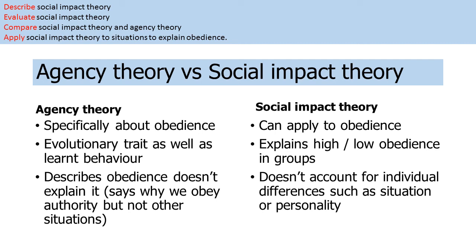Moving on to the comparison between agency theory and social impact theory: agency theory was created by Milgram and suggests we have an evolutionary trait to obey, also socialized from an early age. However, it describes obedience without fully explaining why we obey some authority figures. Social impact theory wasn't designed solely to explain obedience — it also explains conformity and prejudice. It can explain high or low obedience within groups, but doesn't account for individual differences such as situation or personality, nor for individuals who refuse to obey even in a room of 20 people.